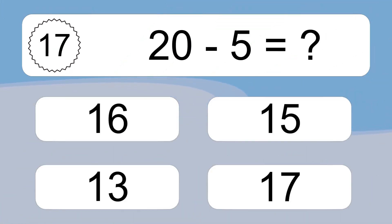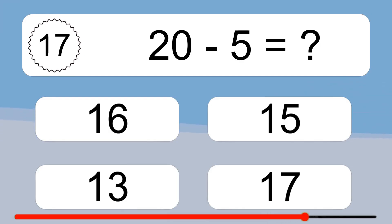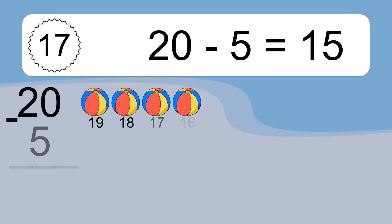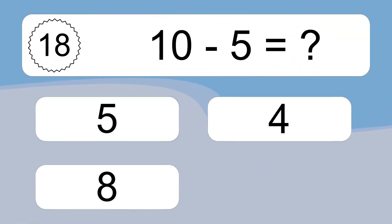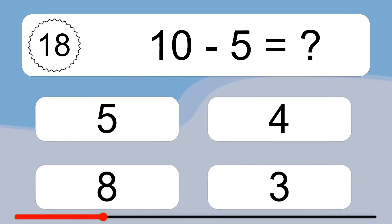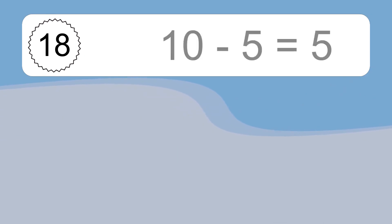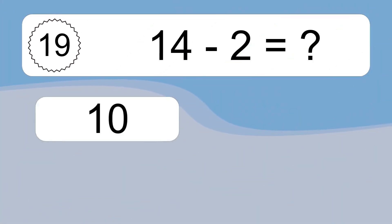20 minus 5 equals what? 20 minus 5 equals 15. Let's count it: 19, 18, 17, 16, 15. 10 minus 5 equals what? 10 minus 5 equals 5. Let's count it: 9, 8, 7, 6, 5.